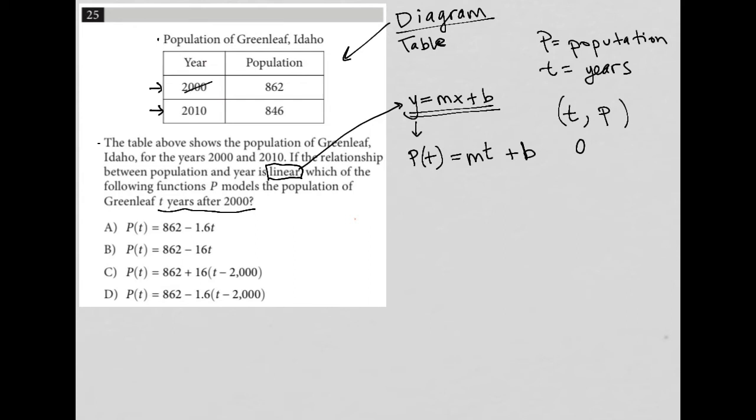But in year zero, the population is 862. And then in year 10, 10 years past 2000 or 2010, the population is 846.